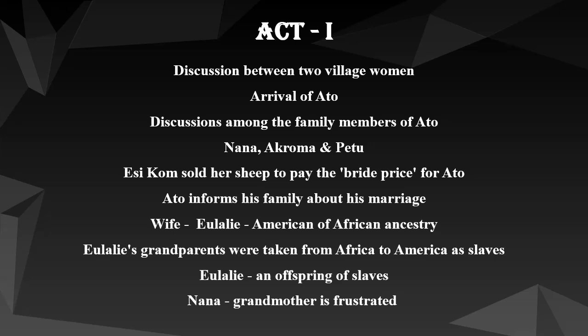Ato informs them that he is already married, and they all are surprised, attacking him with questions like: You are married? Who is your wife? When did you marry? What is her name? Where does she come from? The news troubles them a lot because she is from America and they can't pronounce her name. He assures them she is just an American of African ancestry, because her grandparents were taken from Africa to America as slaves. This confuses them even more — Nana is frustrated about how she will tell the dead ancestors that one of their own had brought home a slave.